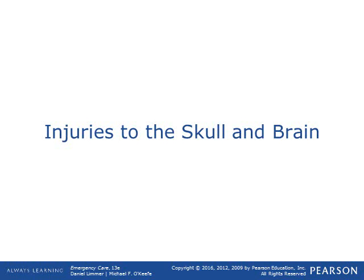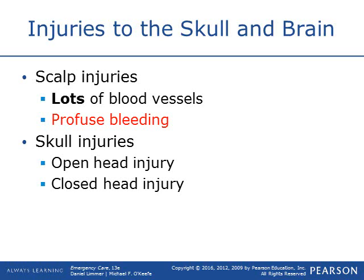Now we'll move on to injuries to the skull and brain. Scalp injuries are very deceiving in how bad they appear. The scalp has a lot of blood vessels, so there can be profuse bleeding — generally a whole bunch of blood from a very small wound. A lot of cuts and nicks to the head look much worse than what they are.